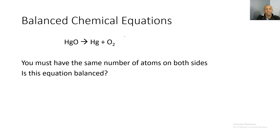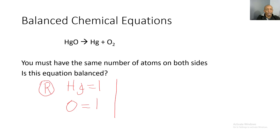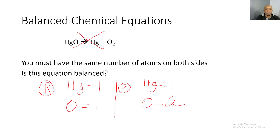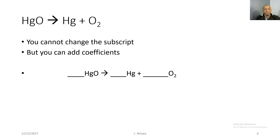Now let's look at balanced chemical equations. You must have the same number of atoms on both sides. Is this equation balanced? Let's take a look — we have one mercury and one oxygen on the reactant side. On the product side, we have one mercury and two oxygen. Our mercuries are fine, but our oxygens are not balanced. So is this equation balanced? No, it is not. Now let's take a look at how to balance chemical equations.